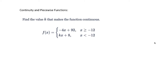Sometimes AP will ask you to do something like this, where you're given a piecewise function and you jump from the top function to the bottom function when x equals negative 12, and they're asking you what do you make k so that this is continuous?